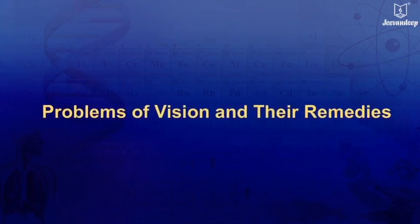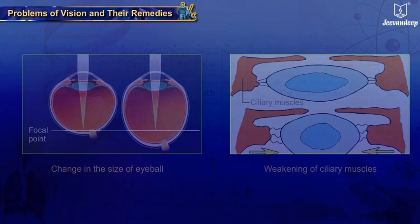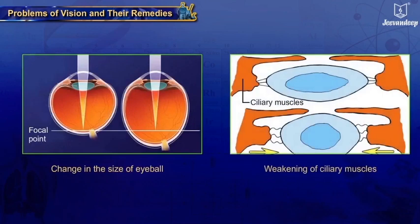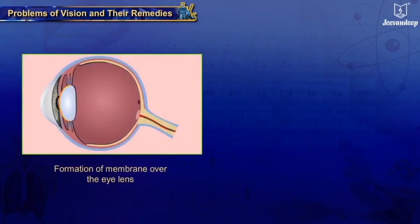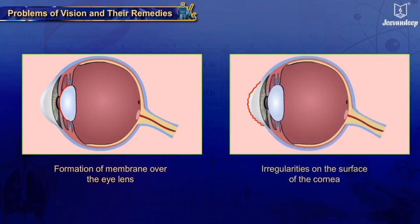Problems of vision and their remedies: Some people cannot see objects clearly due to loss of power of accommodation. Vision problems can occur due to various reasons: change in the size of the eyeball, weakening of ciliary muscles, formation of an opaque membrane over the eye lens, or irregularities on the surface of the cornea. Because of these refractive defects, vision becomes blurred.